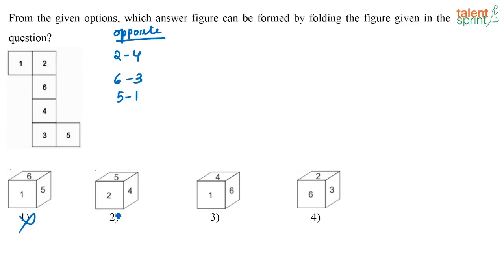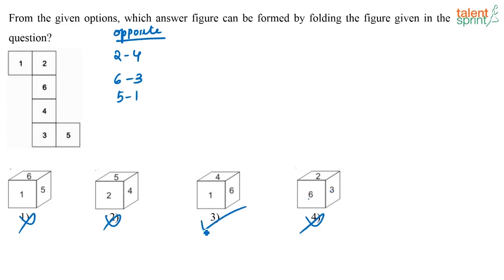Now look at option 2. Here again, 2 and 4 are adjacent to each other — 2 and 4 are opposite to each other, so that's not possible. Now look at option 3. Again here, 6 and 3 are shown as adjacent to each other, but 6 and 3 are actually opposite to each other. This is their only correct answer. So this way if you solve, it is very easy.